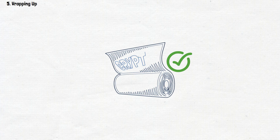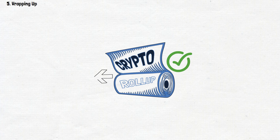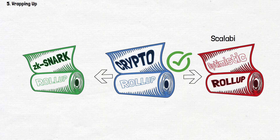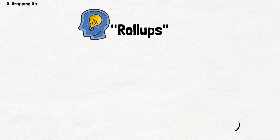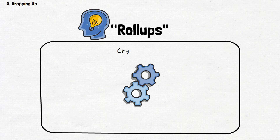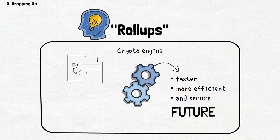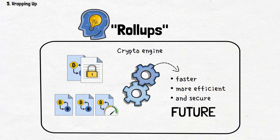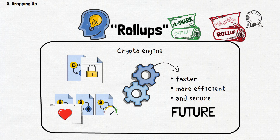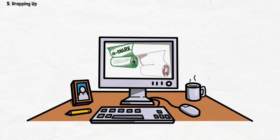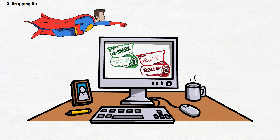That wraps up our journey into the world of crypto rollups. We've explored how these ingenious solutions, like ZKs and optimistic rollups, act as the backbone of scalability and privacy in the ever-evolving landscape of cryptocurrencies. Remember, rollups aren't just fancy concepts — they're the gears driving the crypto engine towards a faster, more efficient and secure future. Whether it's safeguarding your financial privacy or enabling lightning-fast transactions in your favorite applications, these rollups play a crucial role. So the next time you encounter ZK snarks or hear about optimistic rollups, think of them as the superheroes working behind the scenes to make your crypto experience smoother and more secure.